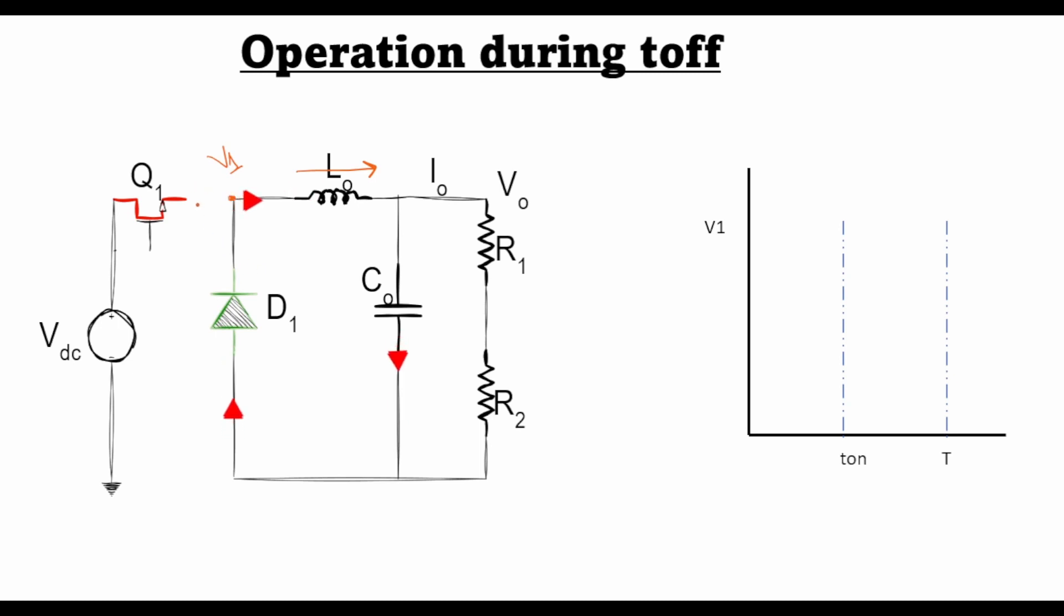And since this voltage is now decreasing quickly because the supply is no longer there, as soon as it becomes negative 0.8, then this diode becomes forward biased because this point is connected to ground and thus there is a forward drop in this direction. And this gives a path for the current to flow, which you can see with these red arrows.